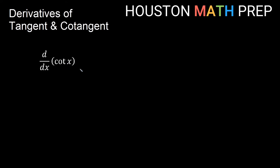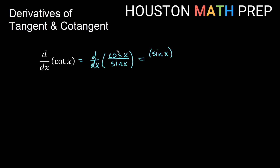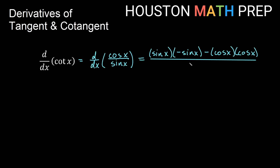Let's do a similar thing with the derivative for cotangent of x. Remember that cotangent of x as a quotient identity is cosine of x over sine of x — it's the reciprocal of tangent. So this is the same as the derivative with respect to x of cosine x over sine x. Let's use our quotient rule again: low d high minus high d low. So we have low function sine x times the derivative of the high function, which would be negative sine x, minus the high function cosine x times the derivative of the low function, which is cosine x.